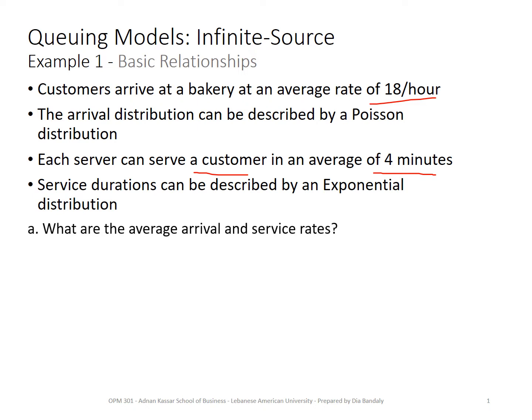The questions are: what are the average arrival and service rates? You should be more familiar with these now. The average arrival rate is lambda, the number of people arriving to the system, which is clearly given to us here. So lambda equals 18 customers per hour.